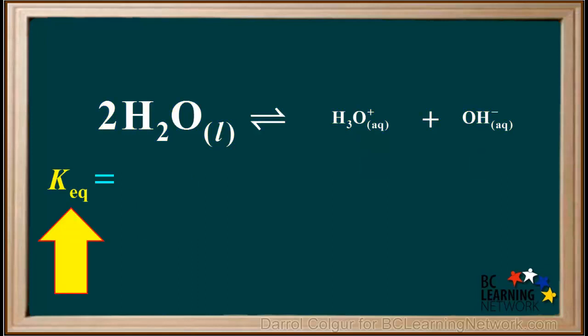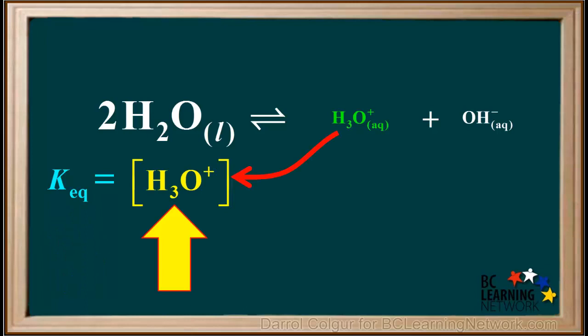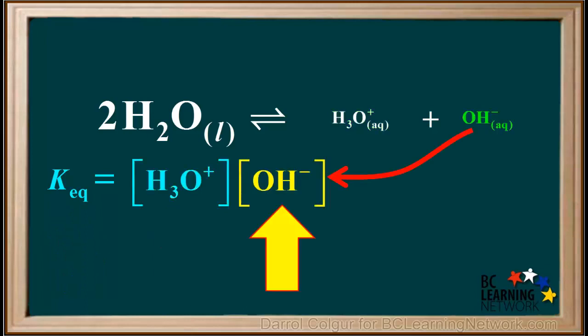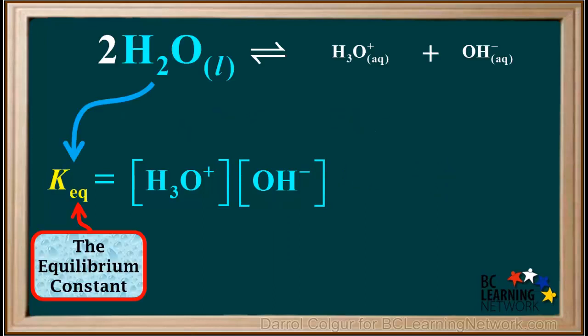The Kq expression for this reaction is equal to the concentration of hydronium times the concentration of hydroxide. Because the water is a liquid, it is not included in the Kq expression. Because this equilibrium constant is specifically concerned with water, we change the symbol from Kq to Kw. Kw is called the ionization constant of water.